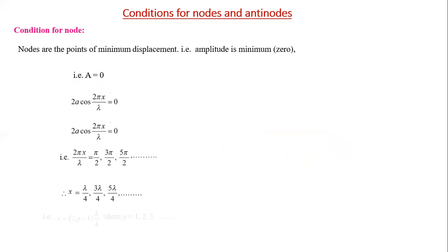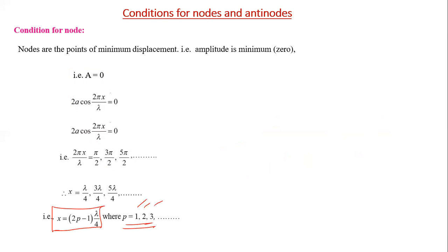In generalized form, the position of nodes is given by x = (2p–1)λ/4, where p = 1, 2, 3, … Substituting p = 1, 2, 3 gives the same node positions as derived above.